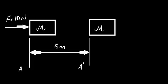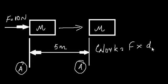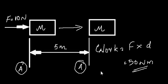In engineering terms, a work transfer happens when you push or pull a body of mass m with a particular force — say 10 newtons — and the body moves along the force axis at a particular distance — say 5 meters. The body moves from A to A'. Work is force times distance, so 10 newtons × 5 meters = 50 newton-meters. That is a work transfer.